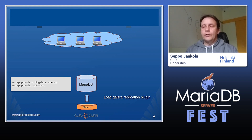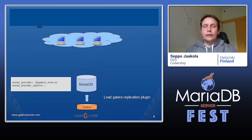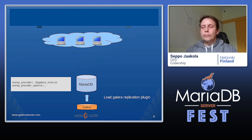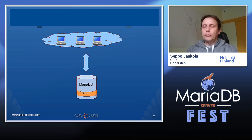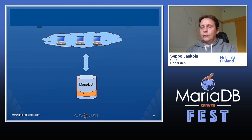You have the plugin in your installation somewhere on your disk. The documentation should tell where it resides. In the configuration variable vsrep_provider, you give the address to this plugin library implementation. When you start your server with such a configuration, you have a single-node MariaDB Galera cluster — just one node in a cluster.